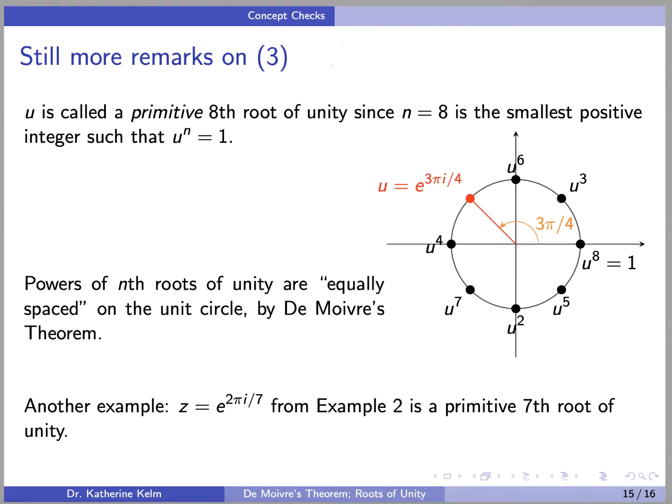We say that u is a primitive nth root of unity if n is the smallest positive integer such that u^n = 1. In our case, u is called a primitive 8th root of unity, since 8 is the smallest positive integer such that u^n = 1. This concept of the smallest such n is an important one.